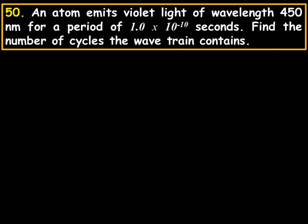An atom emits violet light of wavelength 450 nanometers for a period of 1 times 10 to the negative 10 seconds. Find the number of cycles the wave train contains.